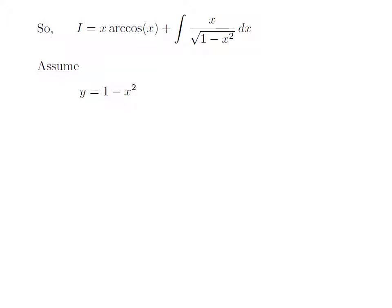To simplify the integration, let us apply the substitution method. Assume y is equal to 1 minus x squared. Taking the differential of y, we get differential of y is equal to the derivative of 1 minus x squared with respect to x, into differential of x. The derivative of 1 minus x squared with respect to x is minus 2x, so differential of y is equal to minus 2x into differential of x.